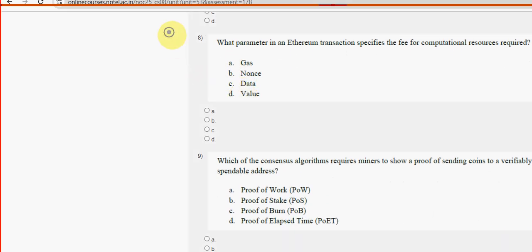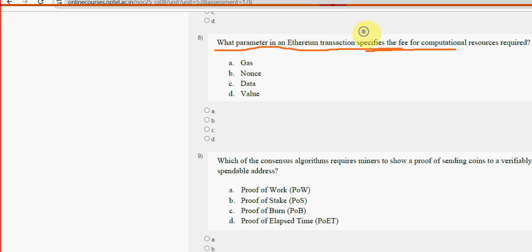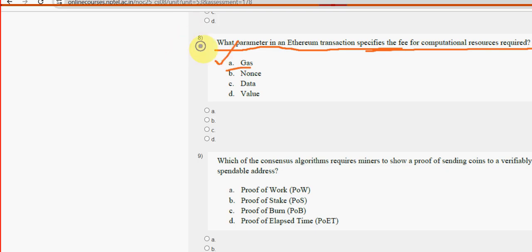Eighth question: what parameter in an Ethereum transaction specifies the fee for computational resources required? For the eighth question, option A is the probable solution — gas.